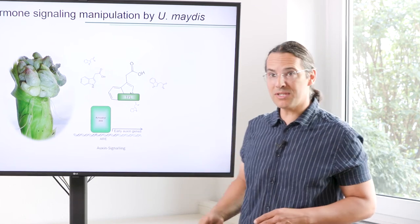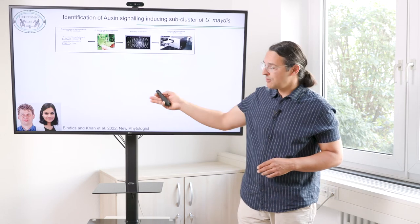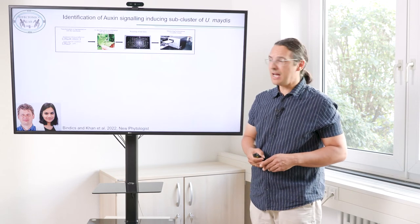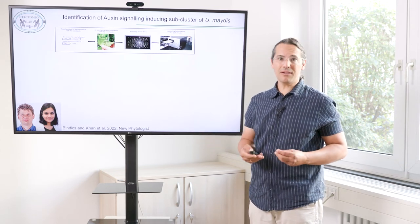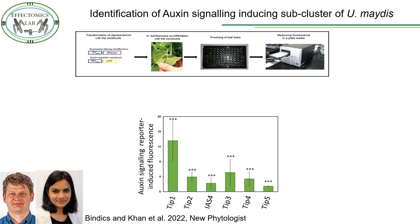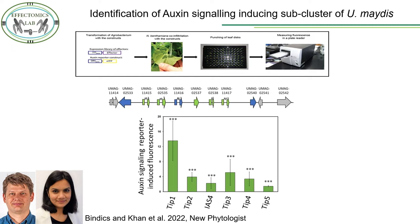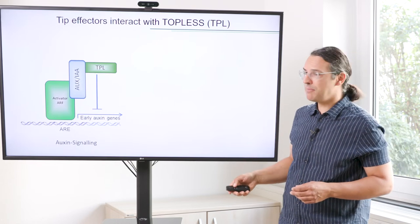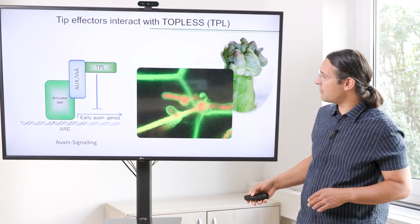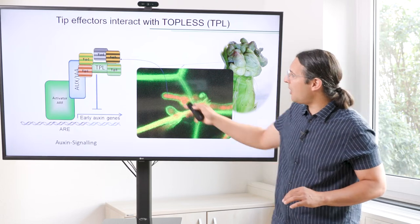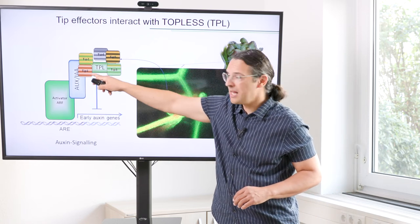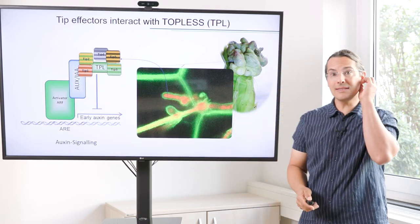We then performed a screen looking for effectors able to induce the growth hormone signalling pathway. This work was done by two of my post-docs, Janosz Bindic and Mamuna Khan. They identified a number of effectors, and interestingly, they were all clustered within the genome. We further analysed what they interact with and identified by co-immunoprecipitation that Ustilago maydis effectors from this cluster all interact with Topless. So Topless is being inhibited by these effectors, thereby de-repressing the auxin signalling pathway in the plant.